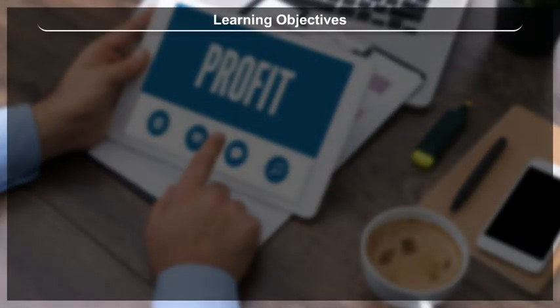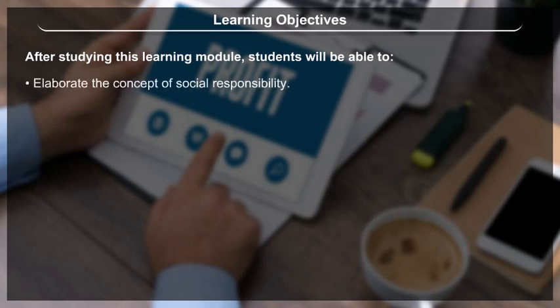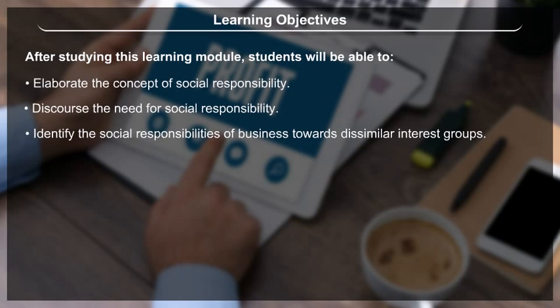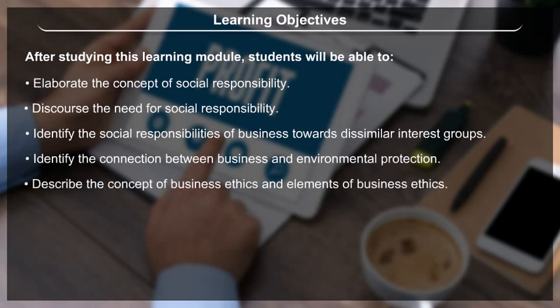Learning Objectives: After studying this learning module, students will be able to elaborate the concept of social responsibility, discourse the need for social responsibility, identify the social responsibilities of business towards dissimilar interest groups, identify the connection between business and environmental protection, and describe the concept of business ethics and elements of business ethics.